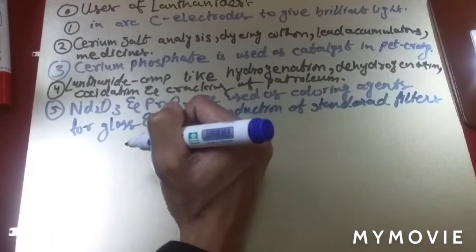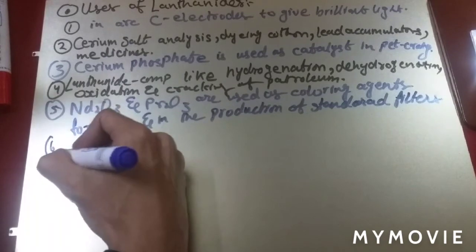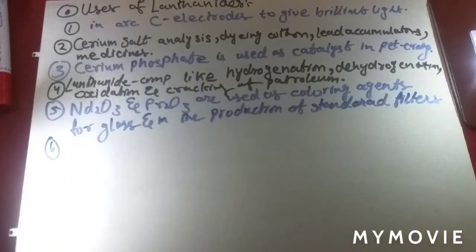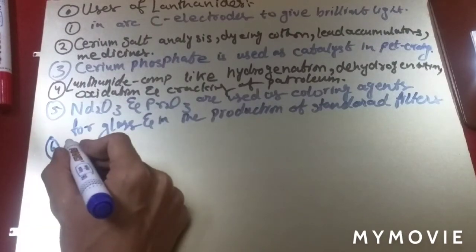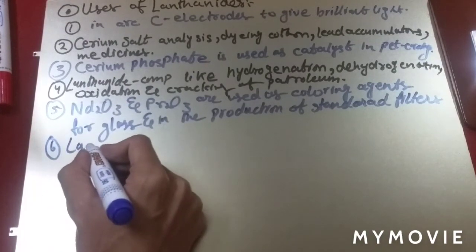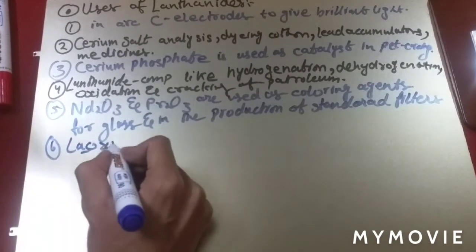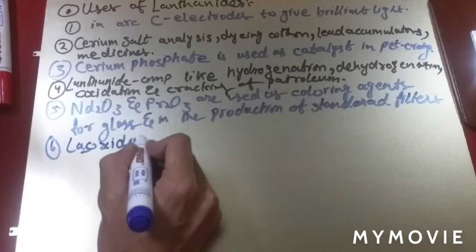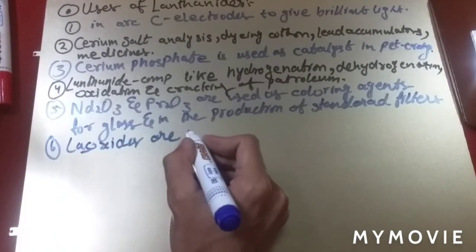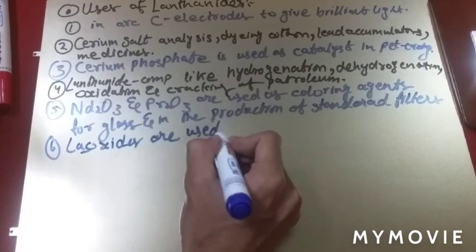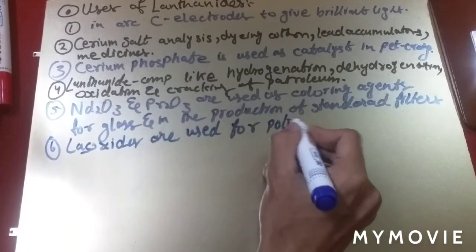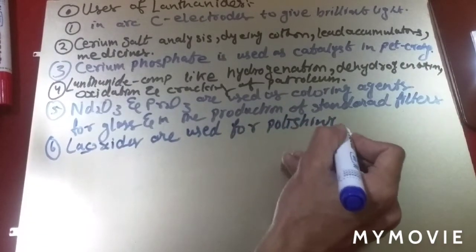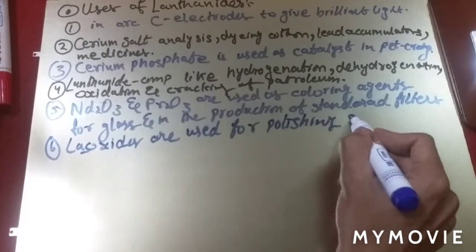Lanthanide oxides are used for polishing glass.